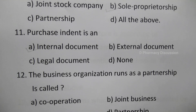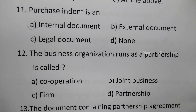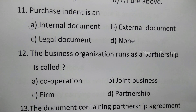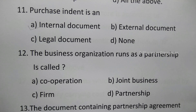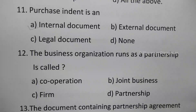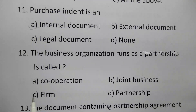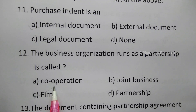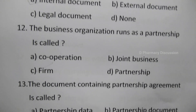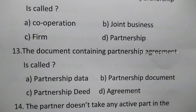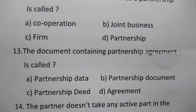Question 12: The business organization that runs as a partnership is called — option A: corporation, B: joint business, C: firm, D: partnership. The correct answer is option C, firm.